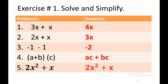3x plus x equals 4x. Number 2: 2x plus x equals 3x. Number 3: negative 1 minus 1 is negative 2. For number 4, the sum of a and b multiplied by c gives ac plus bc. This is a distributive property.